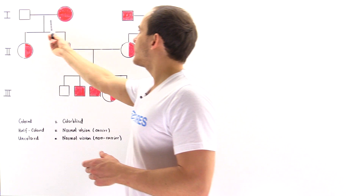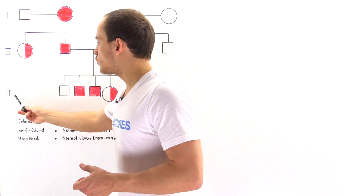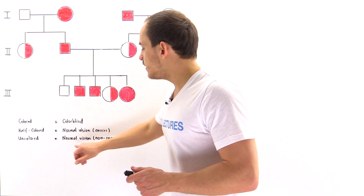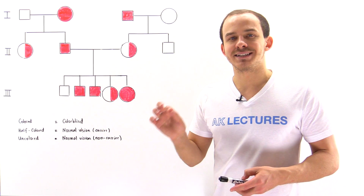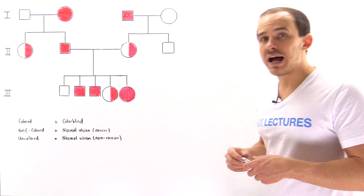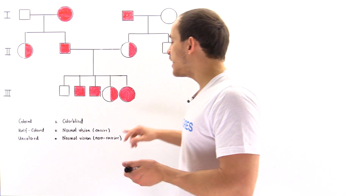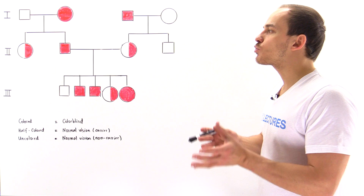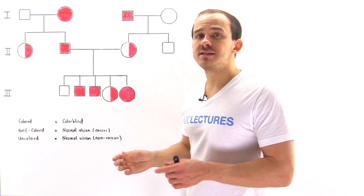We have generation one consisting of four individuals, generation two consisting of four individuals, and generation three consisting of five individuals. An uncolored shape means the individual has a normal phenotype and is a non-carrier. A colored shape means the individual exhibits colorblindness. A half-colored shape means they have the normal phenotype but are a carrier — meaning they are heterozygous — which implies the inheritance for that disease must be recessive.